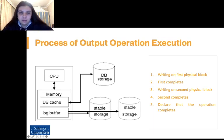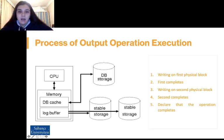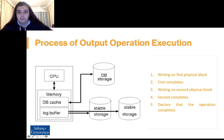This procedure can be extended if we want an arbitrarily large number of copies of each block of stable storage. With a larger number of copies, the chances of failure are reduced. Generally, it is reasonable to simulate stable storage with only two copies. The data in stable storage is safe unless a failure destroys all the copies. Because waiting for disk writes to complete is time-consuming, many storage arrays add NVRAM as a cache. Since the memory is non-volatile, it can be trusted to store data en route to disks and is considered part of stable storage. Writing to stable storage using NVRAM is much faster than writing directly to disk, so performance is greatly improved.